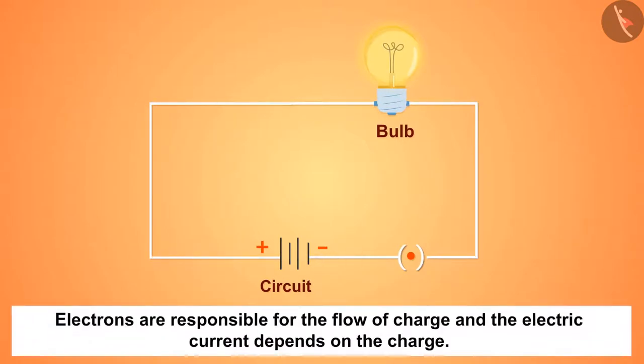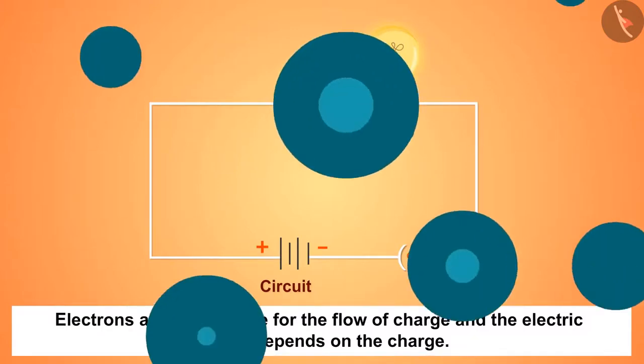But we also know that electrons are responsible for the flow of charge and the electric current depends on the charge, then why does the electric current move in the opposite direction?